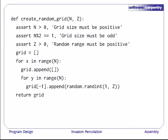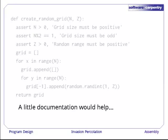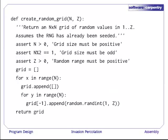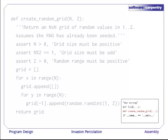Here's the code to create a random grid. It checks that the parameters it's been passed make sense, and then it builds a list of lists of random values. A little documentation would help here. Let's go back and add a doc string. create_random_grid returns an N by N grid of random values in 1 to Z, and it assumes that the random number generator has already been seeded. The box in the lower right shows where we put this function in our program file.